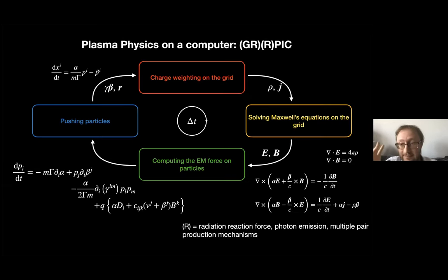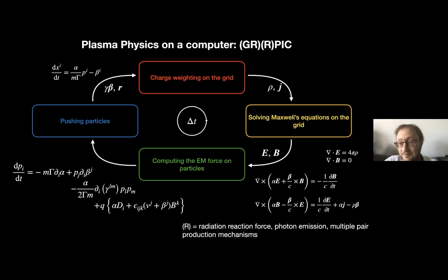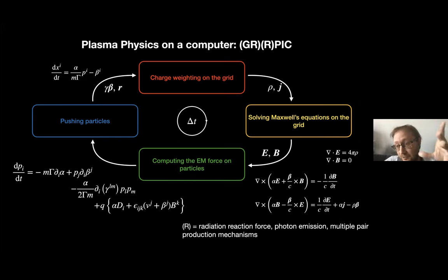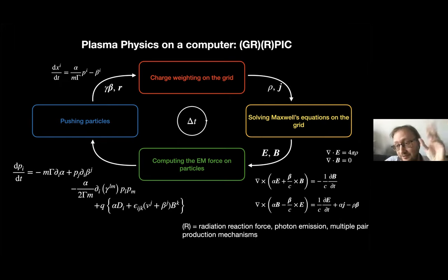In order to test these effects and understand their importance, we are pursuing a program to model this with particle-in-cell simulations in general relativity. These codes have a grid of electromagnetic fields and an ensemble of particles; particles are pushed through the grid and collect self-consistent currents that feed back on the electromagnetic field. This is the loop that the code solves every time step.